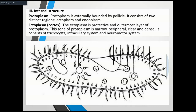How does protoplasm differ from cytoplasm? Protoplasm is cytoplasm plus nucleus. The first part of protoplasm is a viscous liquid, and the second part is the nucleus.